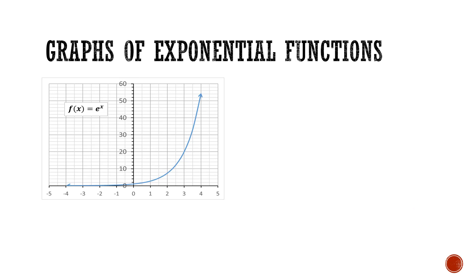Here we have f of x is equal to e to the power of x. As x increases, our function e to the power of x has an increasing and increasing slope. We call this exponential growth, meaning that this function is getting steeper and steeper as x increases — that rate of change is getting higher and higher.